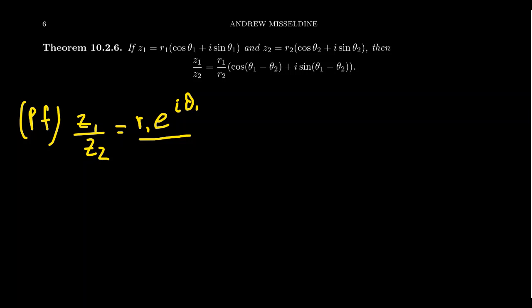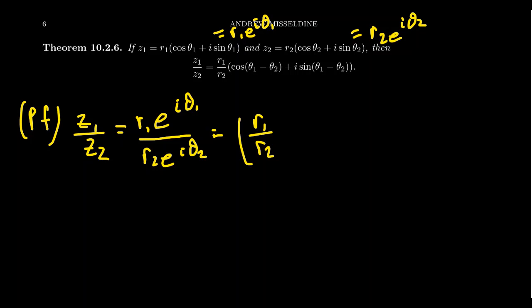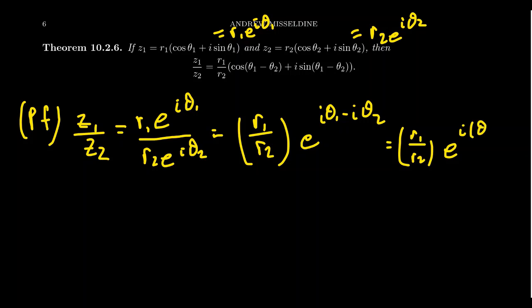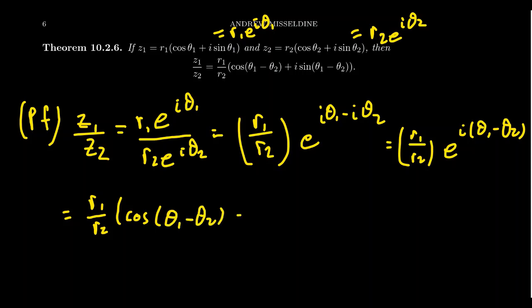If you put z1/z2 in complex polar form, you get R1·e^(iθ1) on top and R2·e^(iθ2) in the denominator. Treating this like a fraction, you get R1/R2 for the modulus part. For the exponentials with a common base, you subtract the exponents: e^(iθ1 − iθ2). Factoring out i gives R1/R2 · e^(i(θ1 − θ2)), and switching back to Cartesian form yields (R1/R2)(cos(θ1 − θ2) + i sin(θ1 − θ2)).